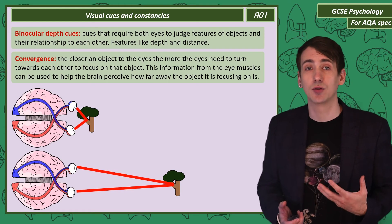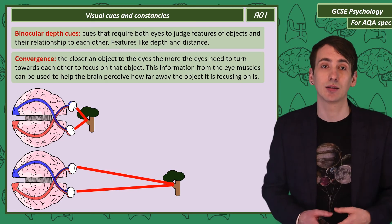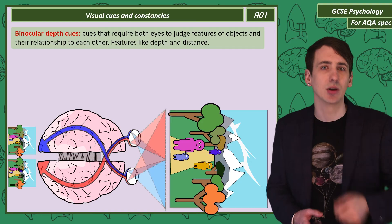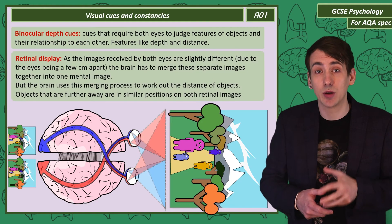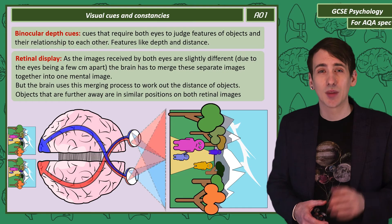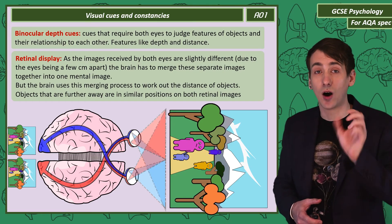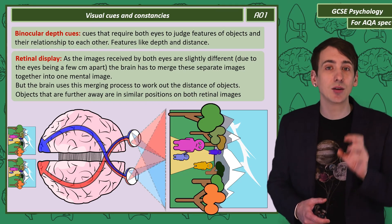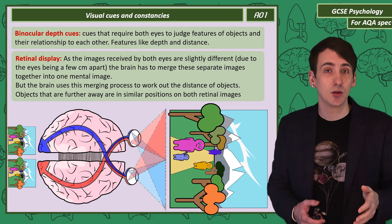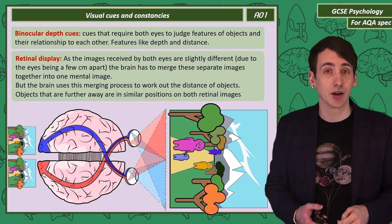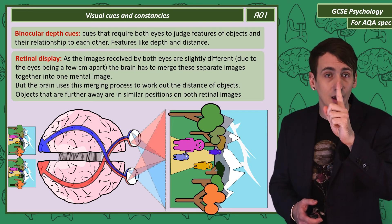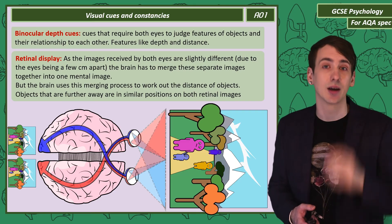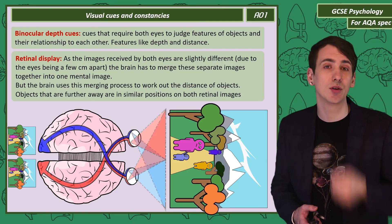As we have two eyes that are slightly separated, both pick up a slightly different image. The brain merges these two images together to make one image of the world. Objects further away are in similar positions in both versions compared to objects that are closer, so the mind uses that information to judge distance. You can see this yourself: hold your finger close to your eyes and open and close each eye quickly — your finger should jump from side to side, while objects on the other side of the room won't move as much.